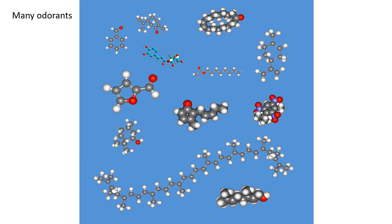How many different smells we can perceive is somewhat of a debated question. One paper published a few years ago concluded that we can distinguish trillions of smells, but that was based on an extrapolation and is still debated. Everyone working in the field would agree there are at least several thousands or millions. Adding further complexity, many common smells we perceive are not based on a single compound but on many compounds together — the aroma of coffee, for example, could be produced by dozens or hundreds of different compounds.